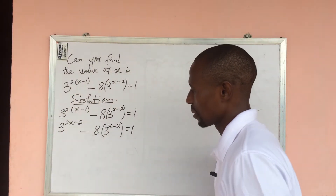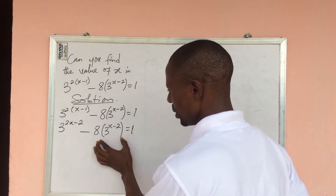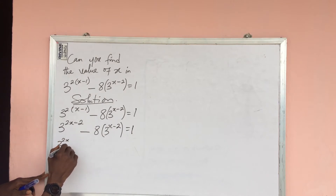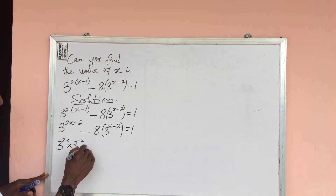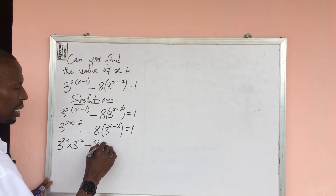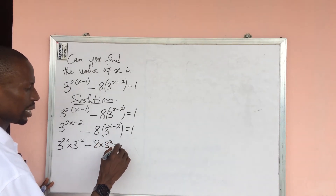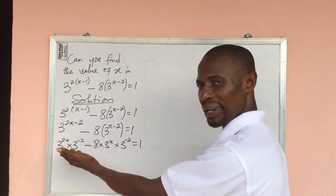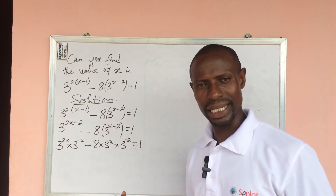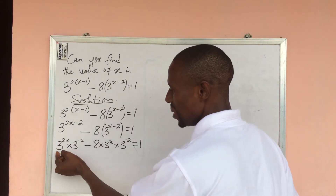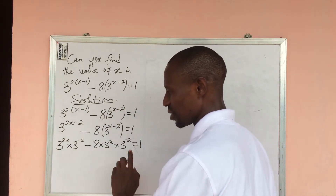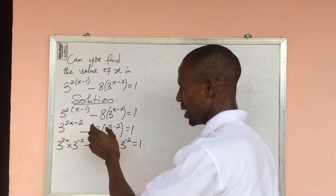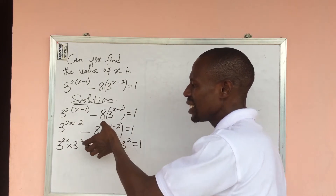We can rewrite these terms as: 3 to the power of 2x times 3 to the power of minus 2, minus 8 times 3 to the power of (3x) times 3 to the power of minus 2, equal to 1. Here I've applied the law of indices — when you have the same base with different powers under multiplication, you keep one base and add the powers.